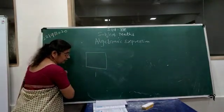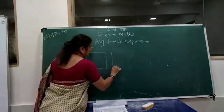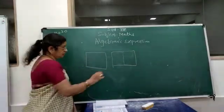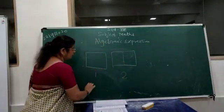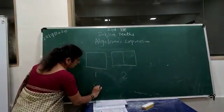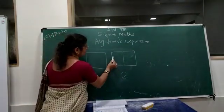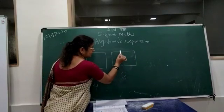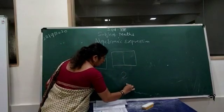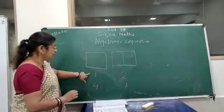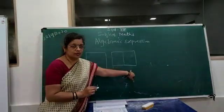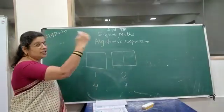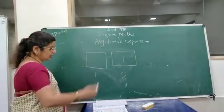This is 1 square. Now if I make 2 squares: for 1 square there are 4 sticks, and for 2 squares there are 7 sticks — because one stick is shared. Similarly, if I take 3 squares, 4 squares, 5 squares, and so on.